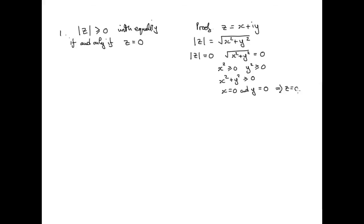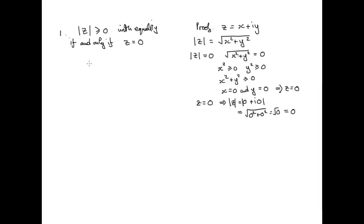And vice versa: if we have the complex number zero, with real part zero and imaginary part zero, then by definition its modulus will be the square root of zero squared plus zero squared, which is the square root of zero, which is zero. So it works both ways — if and only if z is zero will the modulus be zero. That's the first property and its proof.